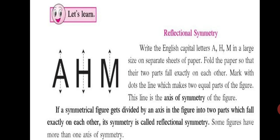Let's learn Reflectional Symmetry. Write the English capital letters A, H, M in a large size on separate sheets of paper. Fold the paper so that the two parts fall exactly on each other. See how A is written and you have to fold it in such a manner that the opposite parts of the alphabet A, which are divided because of that line, will fall exactly on each other. Similar with H.